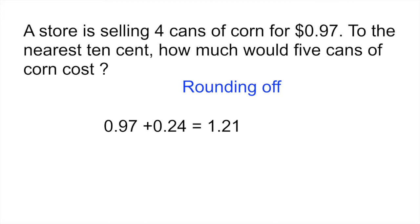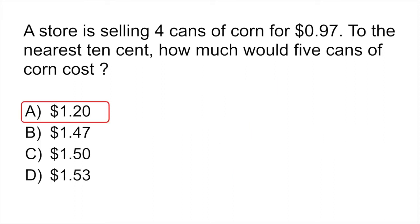So in this case, they're asking you to round off to the nearest ten cents. The rule for rounding off is this. Whenever you have to round off a number, what you do is look at the number to the right. And if that number is more than five, you're going to round up. And if it's less than five, you're going to round down. So in this case, we're rounding down. So our correct answer would be A, $1.20.